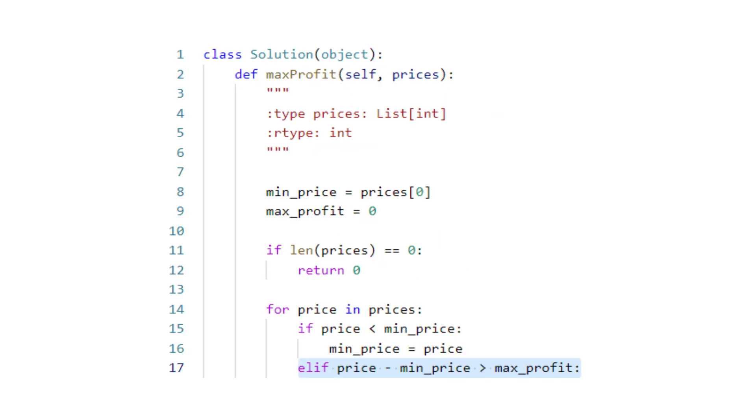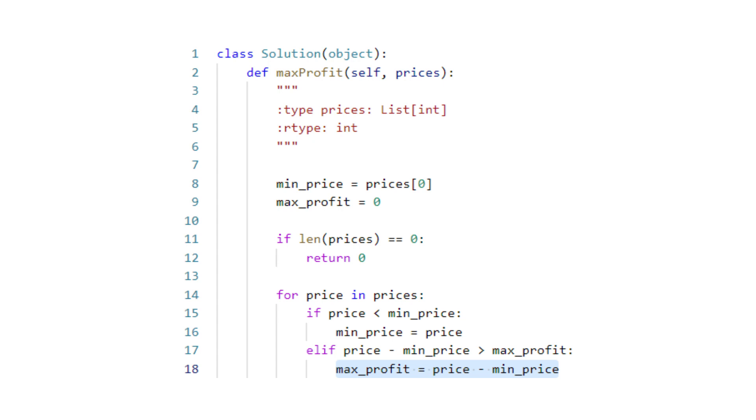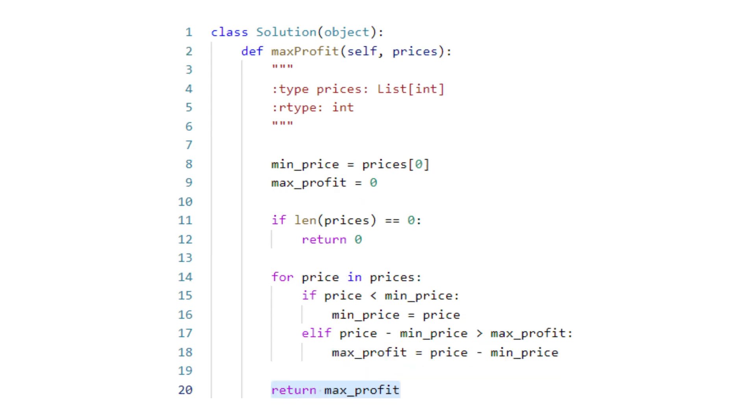Else, if the difference between the current price and the minimum price is greater than the maximum profit we have seen so far, we update the maximum profit. At the end of the iteration, we return the maximum profit.